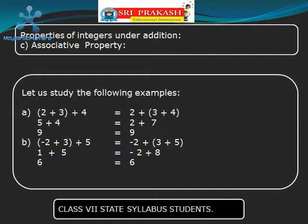Now let us check whether the Associative Property for integers under addition holds good or not. Let us take three numbers: 2, 3, and 4. Let us take 2 and 3 as a group and add them. We get 5. To that let us add 4: 5 plus 4 equals 9.